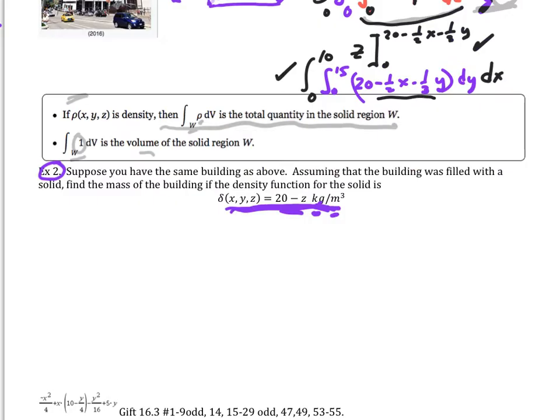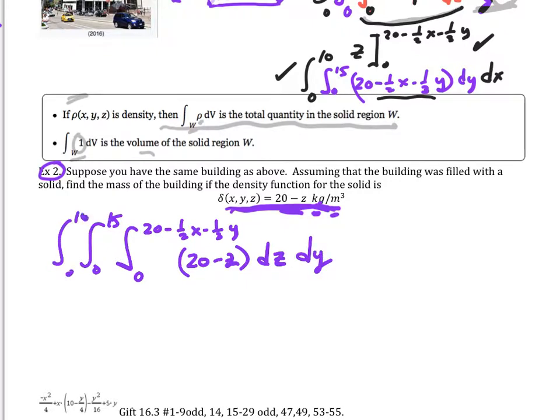For our building that we had above we set this up exactly the same, except for we're going to have this 20 minus one half x minus one third y. And then inside here I'm going to have 20 minus z as my integrand. This would be dz. Then I go out from there 0 to 15 for my y's. And then I'm going to go from 0 to 10 for my x's. So now let's crank this thing out.